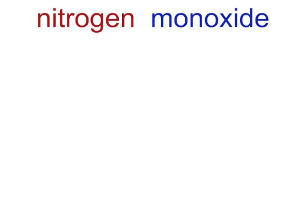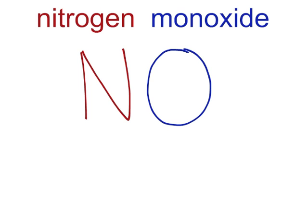What about nitrogen monoxide? No prefix on the nitrogen means there's just one nitrogen atom. The prefix mono- means there's one oxygen atom. This compound also has a common name, and it's called nitric oxide.